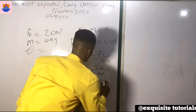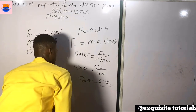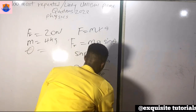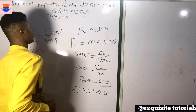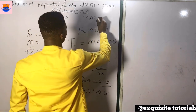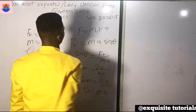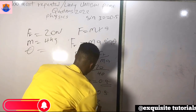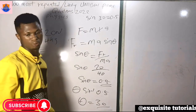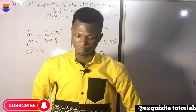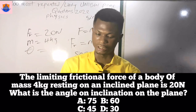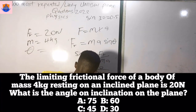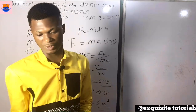sinθ = 0.5. Therefore θ = sin⁻¹(0.5). Note that sin 30° = 0.5, so θ = 30°. Options: A — 75°, B — 60°, C — 45°, D — 30°. The correct answer is option D — 30 degrees.